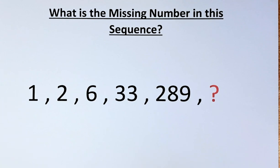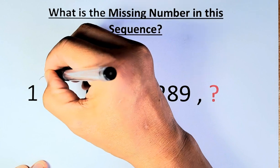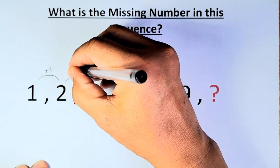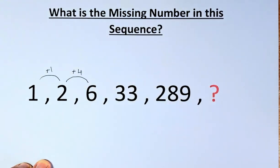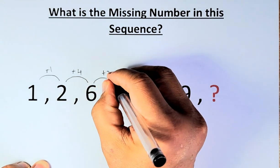So to do that, we shall just find the addition first. So 1 to 2 is going to be plus 1, 2 to 6 is going to be plus 4, 6 to 33 is going to be plus 27.